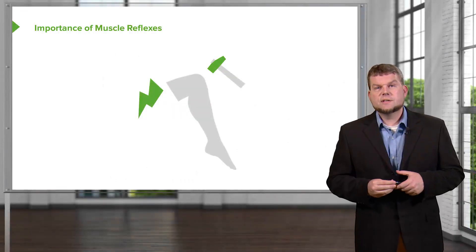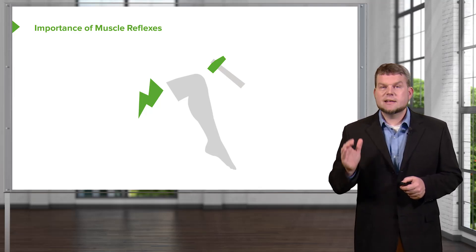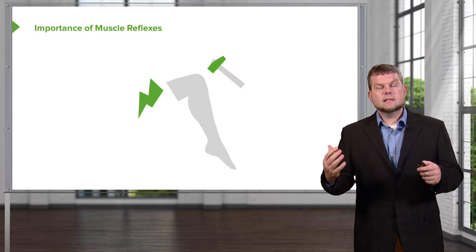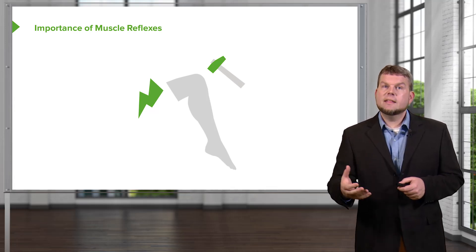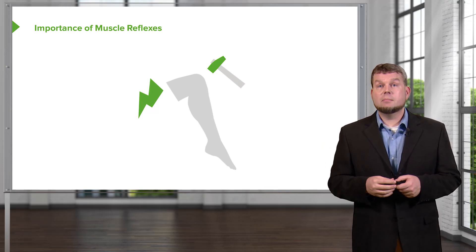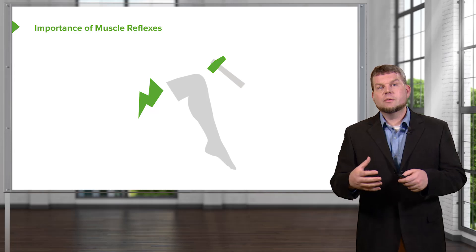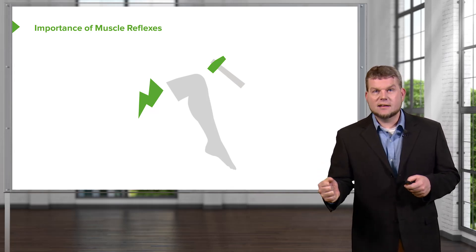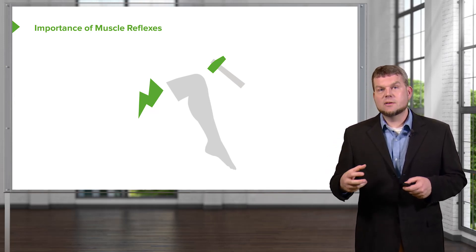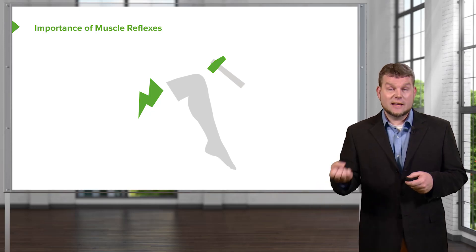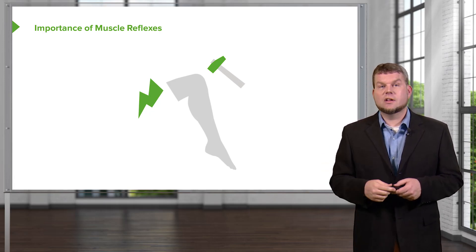Why are muscle reflexes so important? The main reason why muscle reflexes are there is to prevent injury. We saw things like the stretch reflex — muscle spindles sensing the amount of stretch and then causing a contraction of that muscle because it was being stretched too much. In Golgi tendon organs, we had a response where there was too much tension on the tendon. Therefore, we have to reduce the amount of tension by relaxing the muscle undergoing that increase in tension and contracting the opposite muscle group so that you don't have so much tension on that tendon.